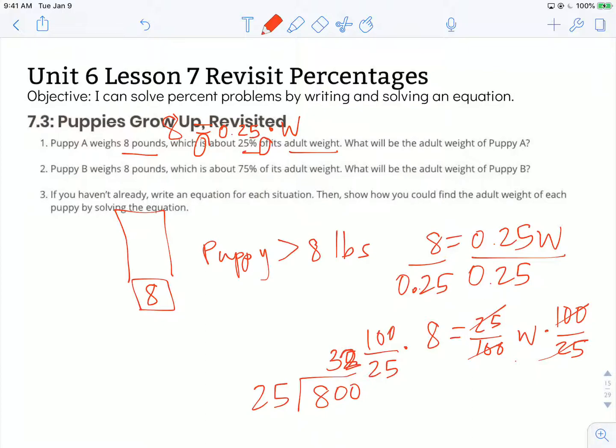When that puppy is an adult, puppy A is going to weigh about 32 pounds. And that cool symbol like that means about or approximately.